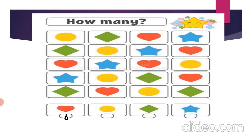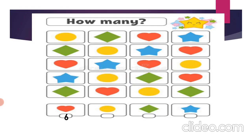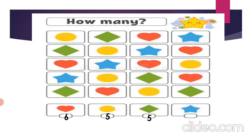Now kite — count the kites: one, two, three, four, and five. So again, five kites are there. And at last, stars — come on, count the stars: one, two, three, and four. So there are four stars.